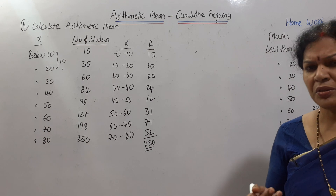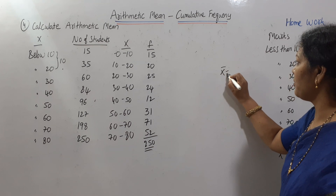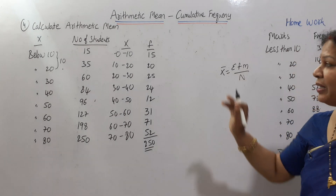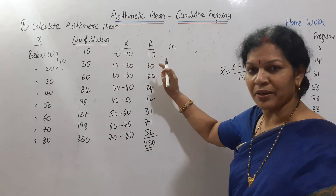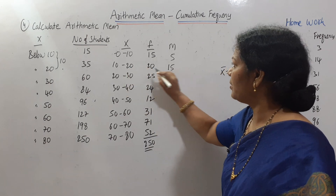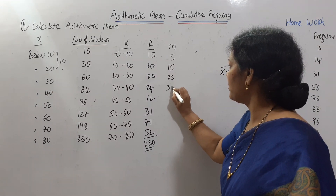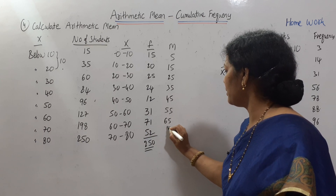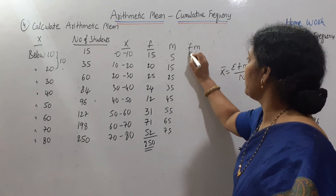Now we know the formula: x̄ = σfm / n. First, we need the mid value (m). For the class 0–10: (0 + 10) / 2 = 5. For 10–20: 15. Continuing the same way: 25, 35, 45, 55, 65, and 75. Then we need fm — frequency multiplied by mid value.